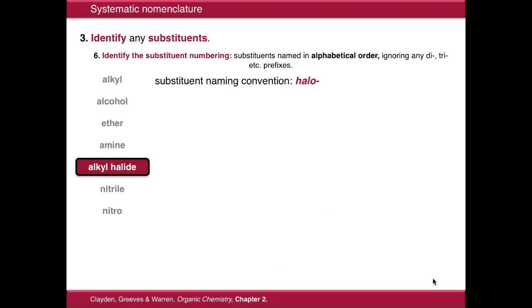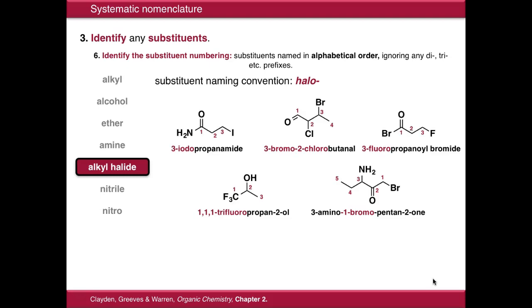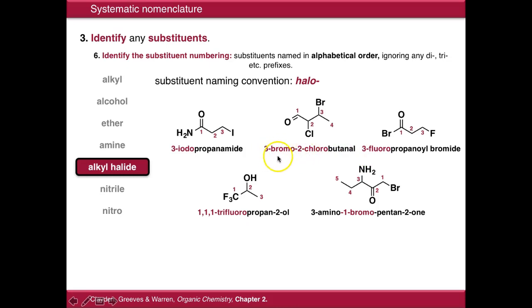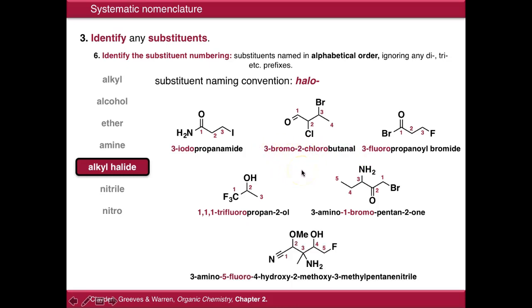Alkyl halides are named fluoro, chloro, bromo, or iodo, just indicating the position in the molecule with numbers. So: 3-iodopropanamide; 3-bromo-2-chlorobutanol — notice that's in alphabetical order because B comes before C, not in number order. And again, a more complicated example.